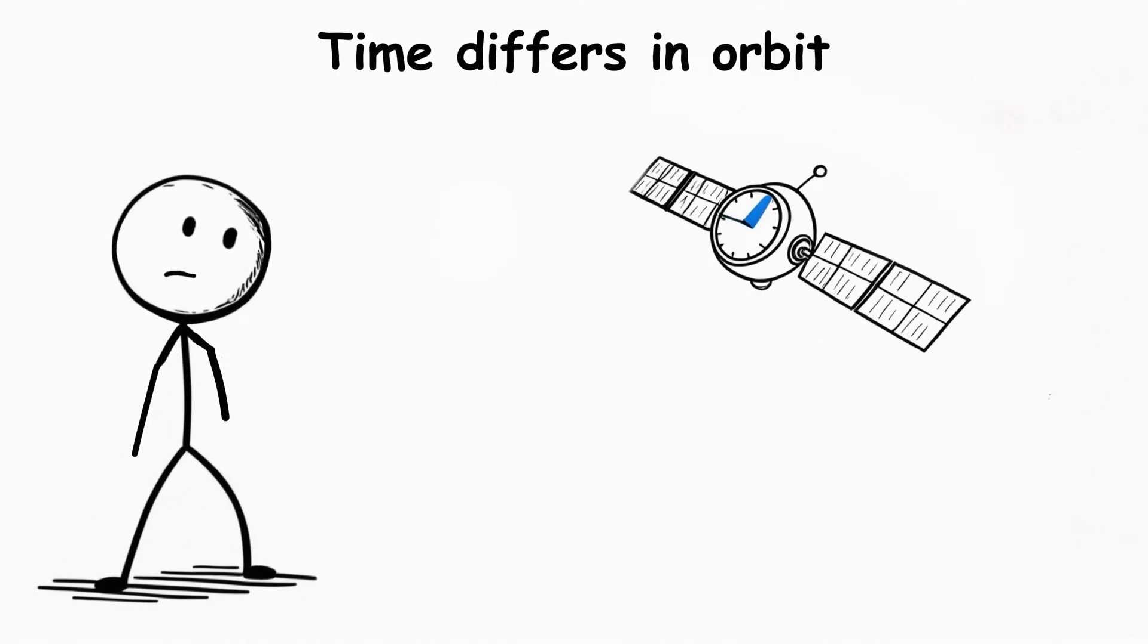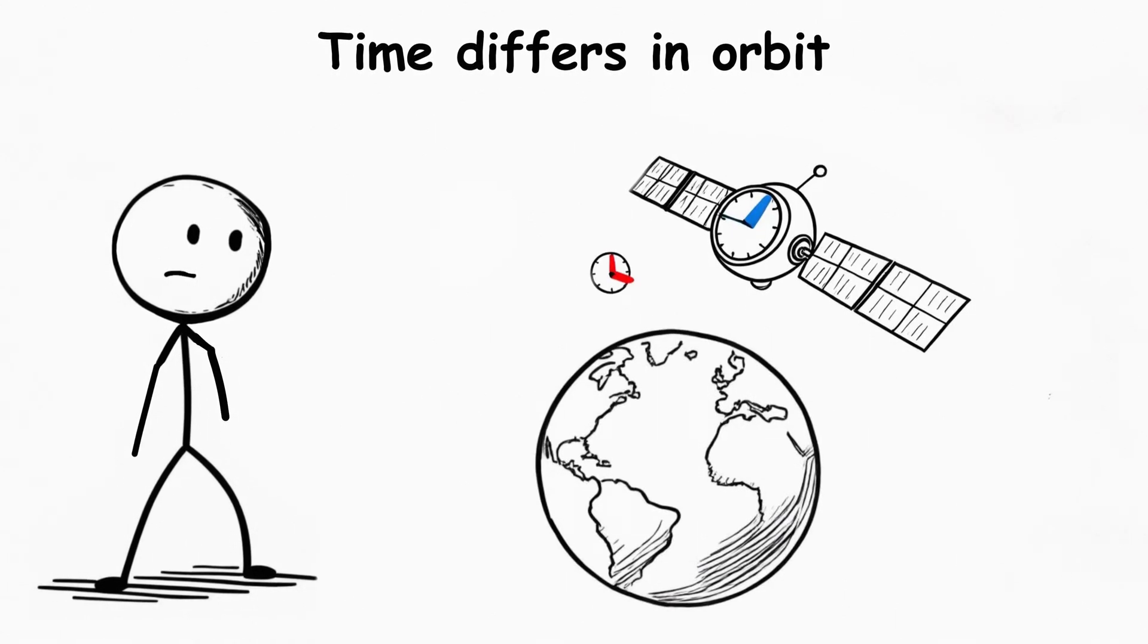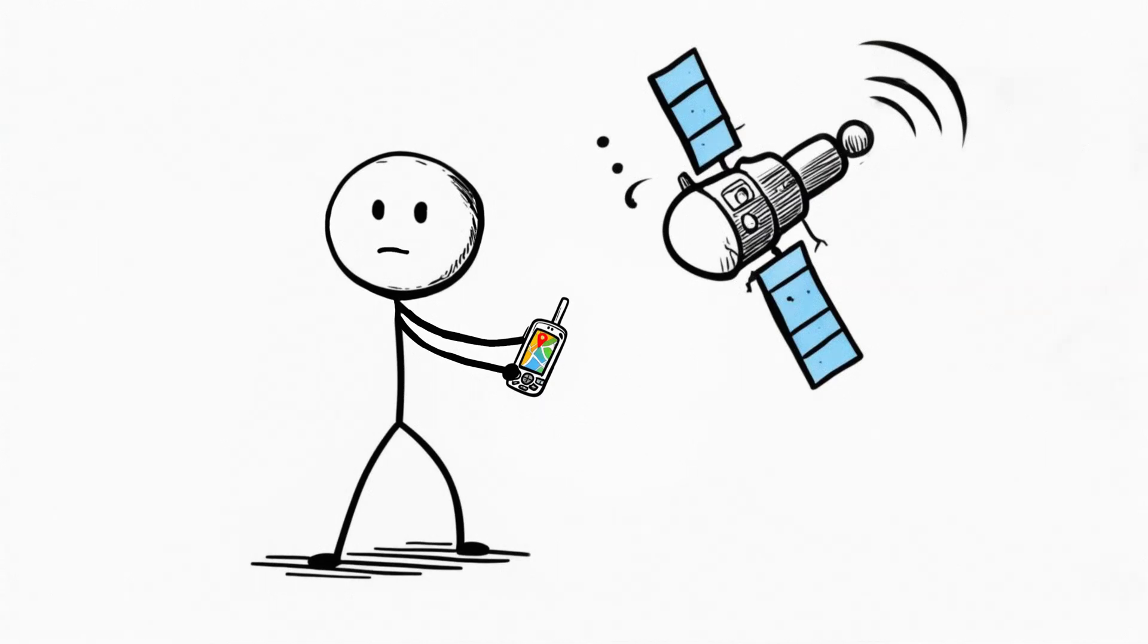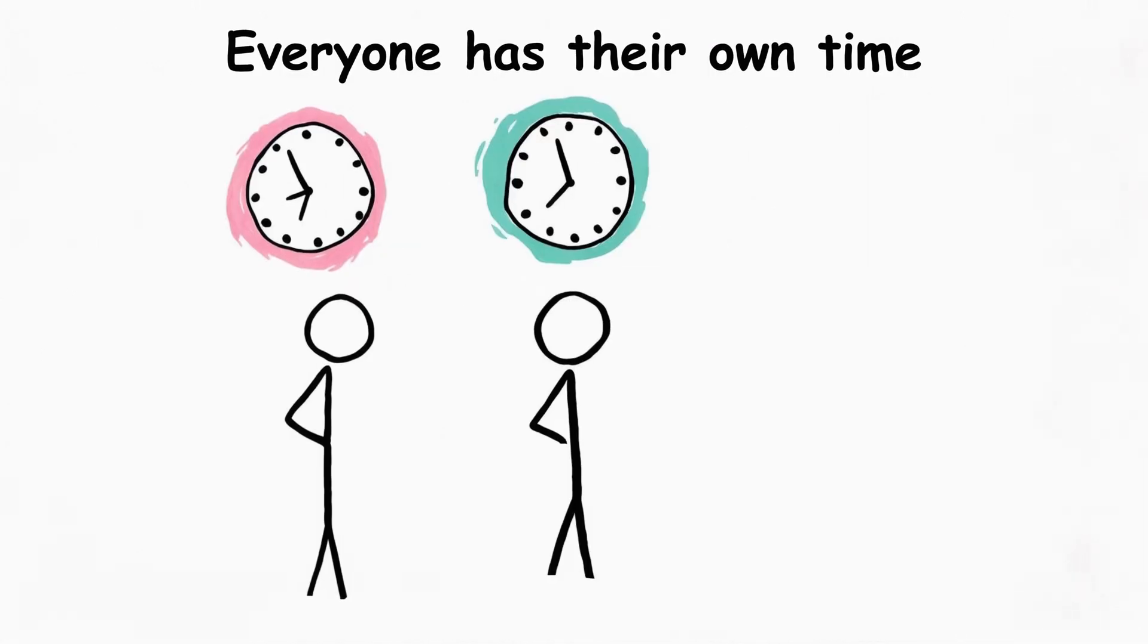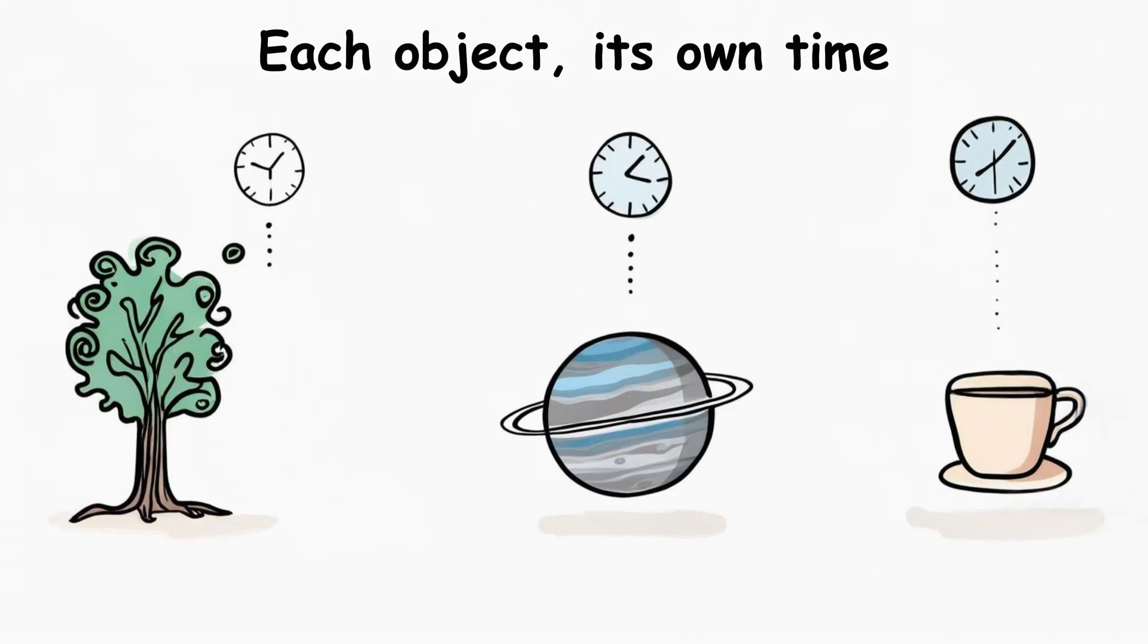For a satellite in orbit, time runs slightly faster than for us on Earth. If this is not taken into account, GPS navigation would fail. This means there is no single time for all. Every object has its own time.